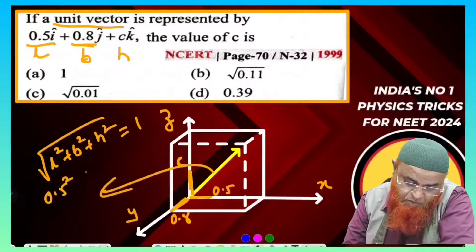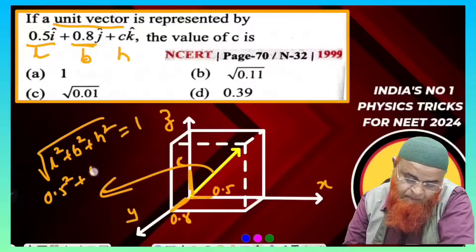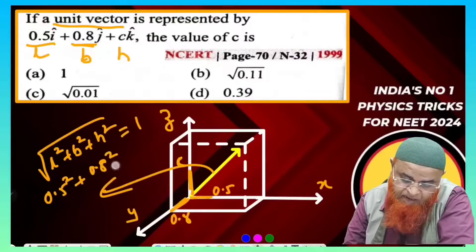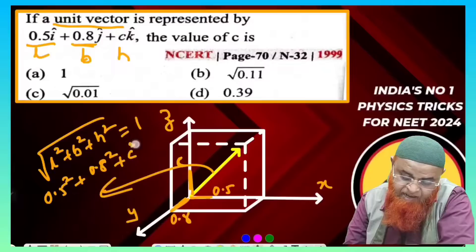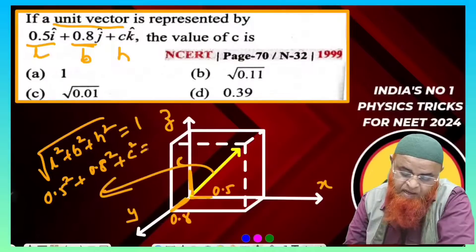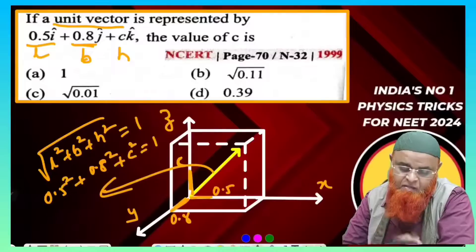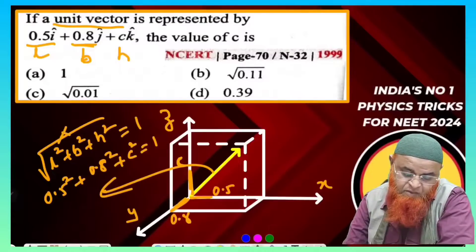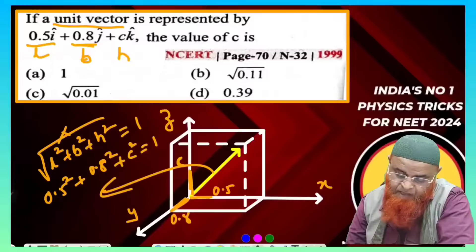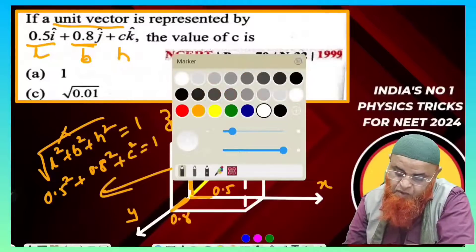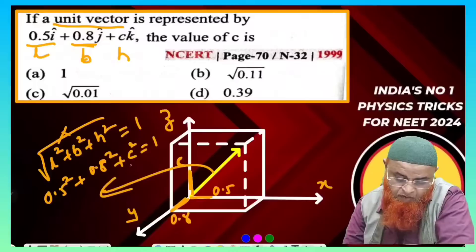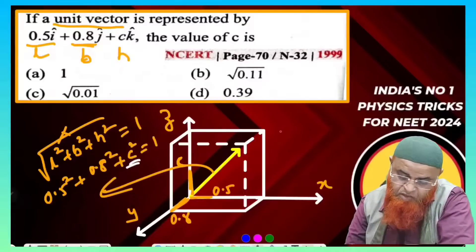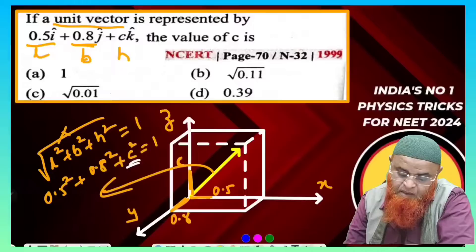Substituting the values: L = 0.5, B = 0.8, and H = C, we get √(0.5² + 0.8² + C²) = 1. Squaring both sides cancels the square root, and we can now solve for C.